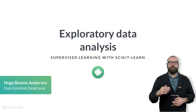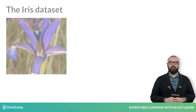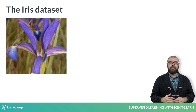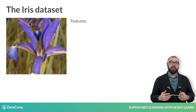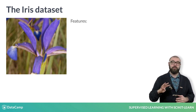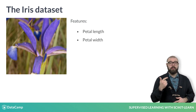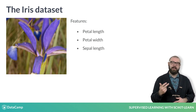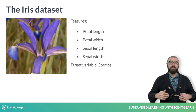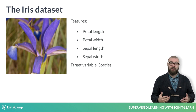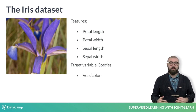Let's now jump into our first dataset. It contains data pertaining to iris flowers, in which the features consist of four measurements: petal length, petal width, sepal length, and sepal width. The target variable encodes the species of flower, and there are three possibilities: Versicolor, Virginica, and Setosa.